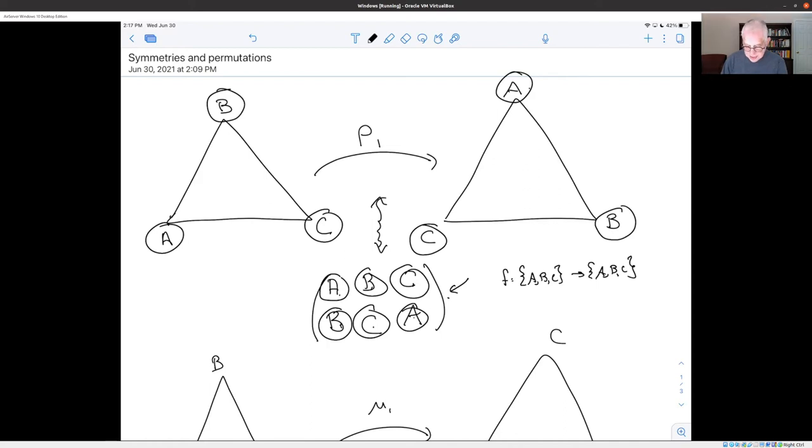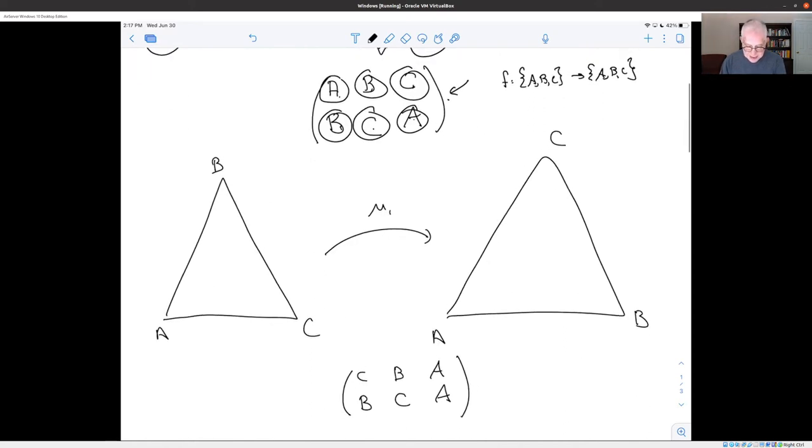So let's look at another example. This is the reflection around the lower left hand vertex. And how do we convert this to a permutation? Well, the rule is C came from B, B came from C, and A came from A.